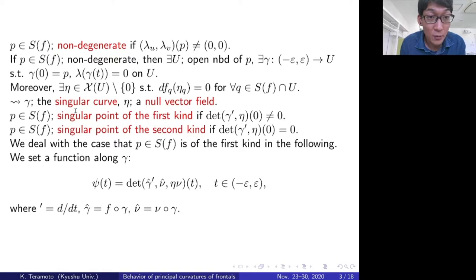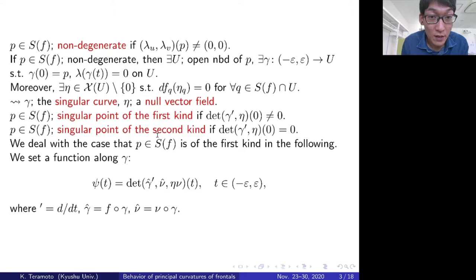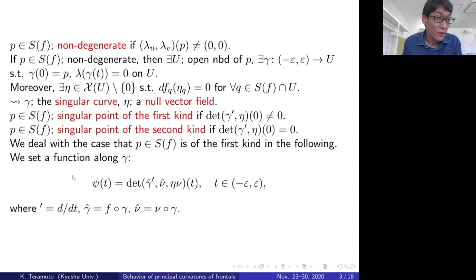Moreover, we define some classes of non-degenerate singular points. One is a singular point of the first kind and the other is a singular point of the second kind. A non-degenerate singular point is said to be of the first kind if γ' and η are linearly independent at that point. Otherwise, we say it is a singular point of the second kind. Here, γ' is the tangent vector of γ. We deal with the case that P is of the first kind in the following.